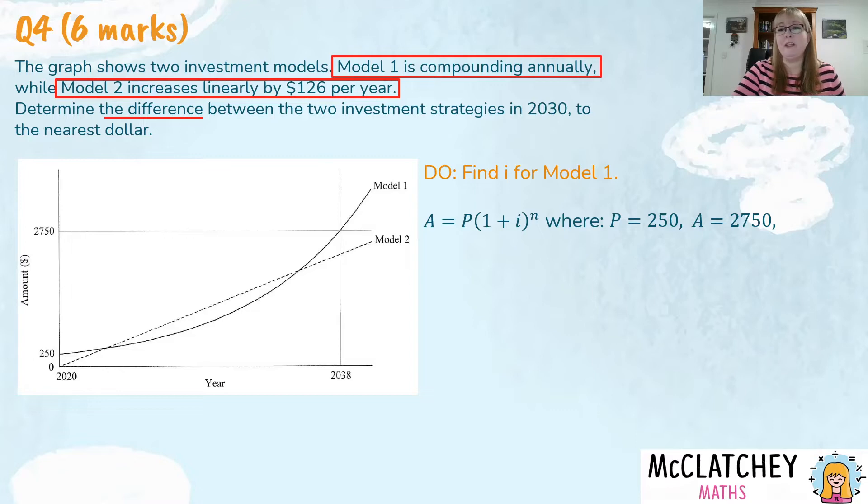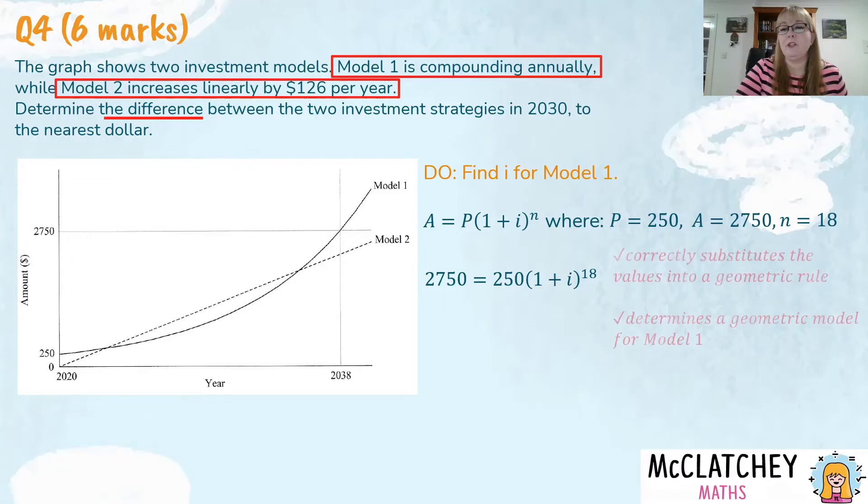So we've got a little bit of information. We also know that across those 18 years the value of n will be 18 because it's only compounded once per year. So the missing variable is the interest rate. We can actually work that out. It's only one variable that's missing. So let's substitute that information straight into the formula and then we're going to rearrange or transpose that formula. So we're going to divide both sides by 250 and once we've substituted into that formula correctly the QCAA awarded a mark for correctly substituting the values into a geometric rule.